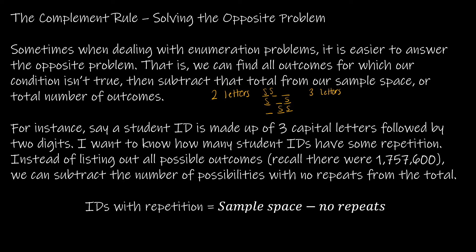Or I could have two numbers the same, or two letters and two numbers, or three letters and two numbers. Going through and finding all of those different ways would be a real pain, but instead let's think about doing this in a much simpler way. If I'm trying to figure out how many student IDs have some repetition, it's easier to determine how many IDs have no repetition and subtract that from the total sample space.